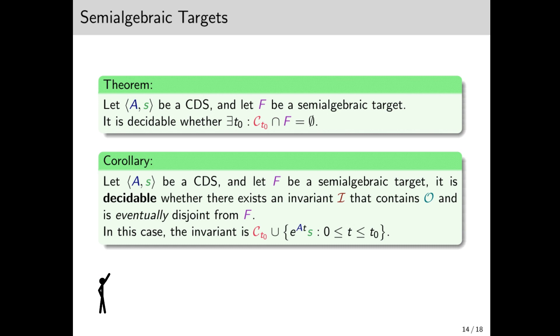Well, this is nice, but it's still not quite what we hoped for. We still can't decide if there exists an invariant that contains the entire orbit. But we can decide, unconditionally, whether there exists an eventual invariant, one that contains the orbit from some point and on, namely C_{t₀}.